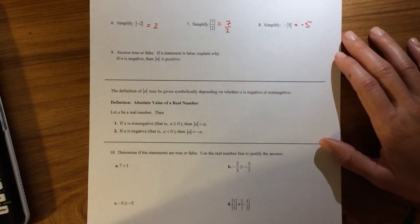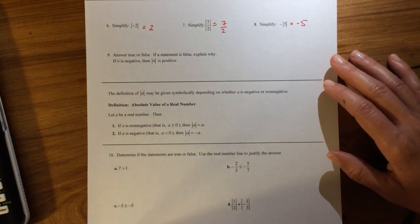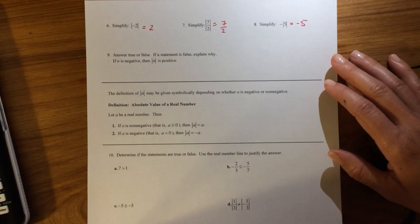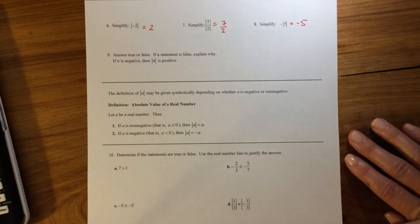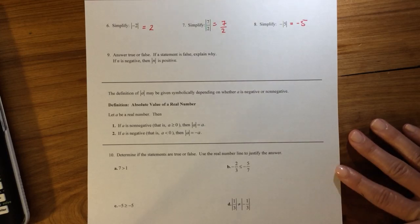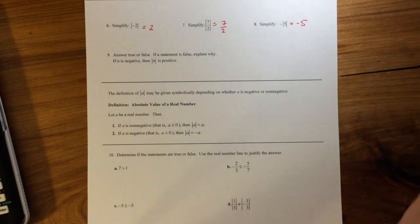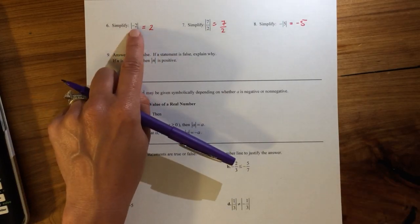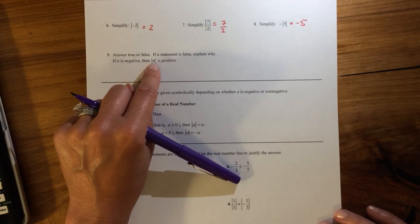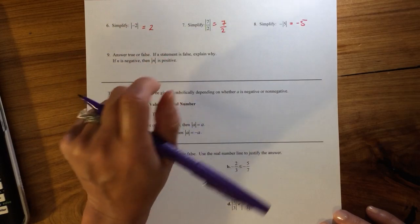Alright, so number 9. Answer true or false. If it's false, explain why. If n is negative, then the absolute value of n is positive. So pause the video, think it over for a minute, press play when you're ready to come back. Well, let's see. Just use number 6 as your guide. So if n is negative, say the n is negative 2, then the absolute value of n is positive. So if you use 6 as an example, what do you think?